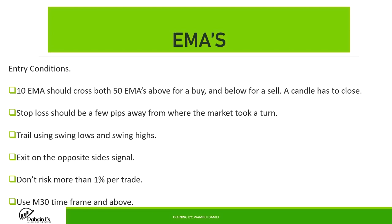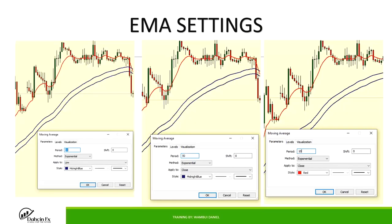Here are the EMA settings. Right-click on the line to adjust it. The three lines are EMAs: the red one is the 10 EMA. One of the others is the 50 EMA applied to low — period 50, method exponential, applied to low — and the other is the 50 EMA applied to close. To add these, go to MT5: Insert > Indicator > Trend > Moving Average.